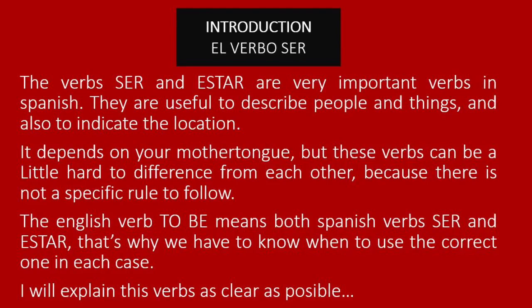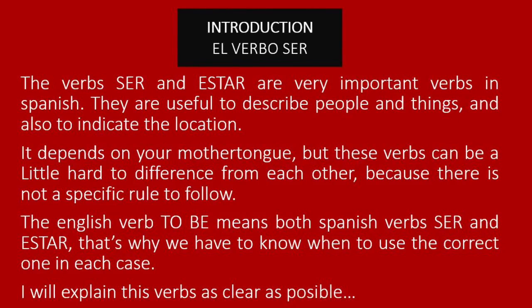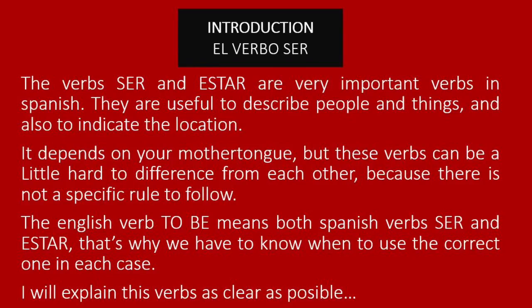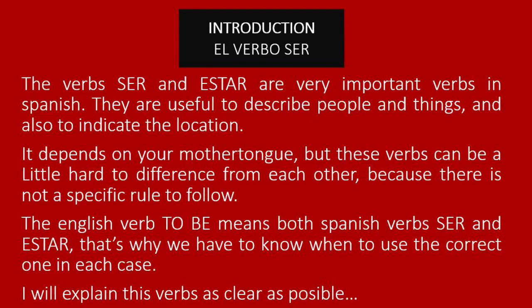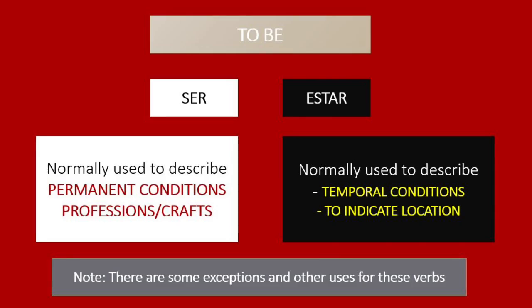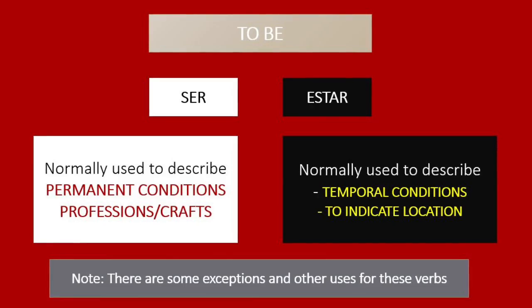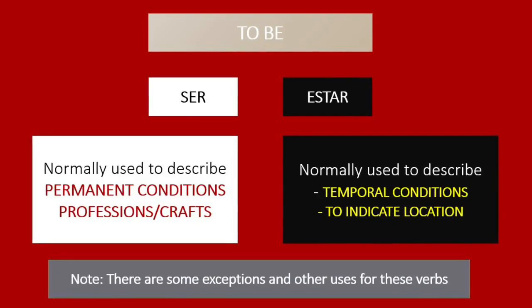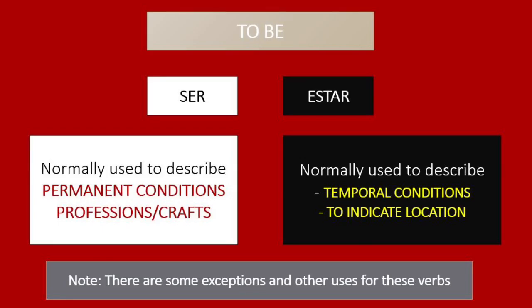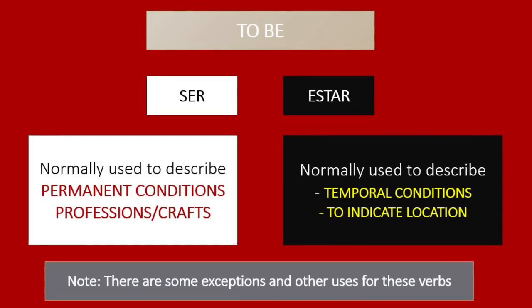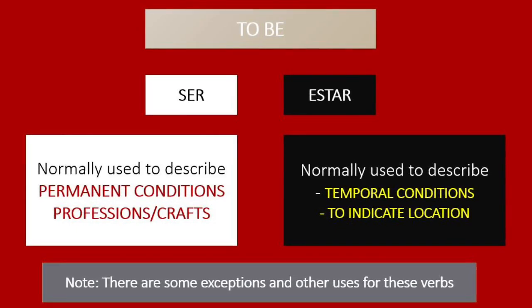In English we have the verb to be. Ser and estar are very important because they don't work precisely in the same way. But let's go ahead and see how it works in Spanish in the basic way. There are some exceptions and many other ways to use these verbs, but basically we can say that normally the verb ser is used to describe permanent conditions, professions or crafts. Normally, the verb estar is used to describe temporal conditions and to indicate the geographic location.